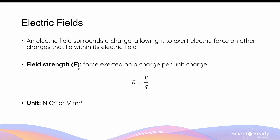Electric field strength, also known as the magnitude of electric field, is defined as the magnitude of force exerted on the charge in the electric field per unit of charge. Mathematically, this is calculated by dividing the magnitude of force by the magnitude of charge affected by this force. The unit of electric field strength is presented as newtons per coulomb, which is derived from the equation force divided by charge.